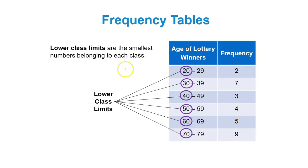Lower class limits are the smallest numbers belonging to each class. So if you look at your classes or bins, you look at the smallest number for that specific category: 20, 30, 40, 50, 60, 70. These are called the lower class limits.